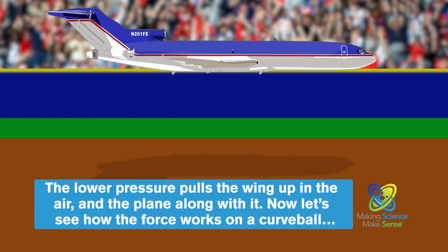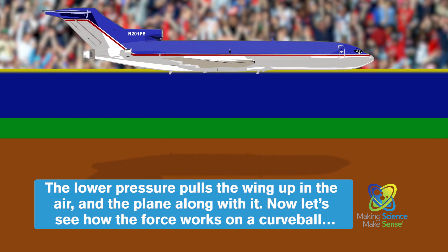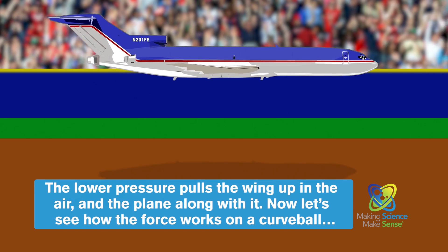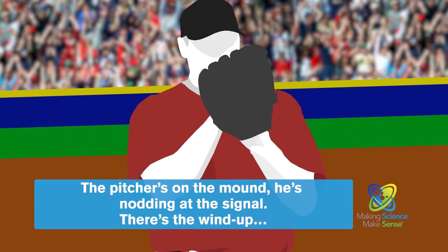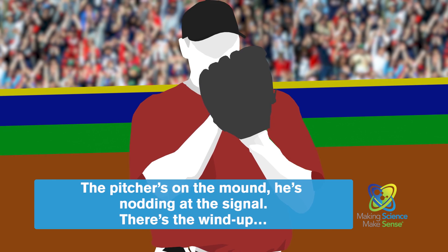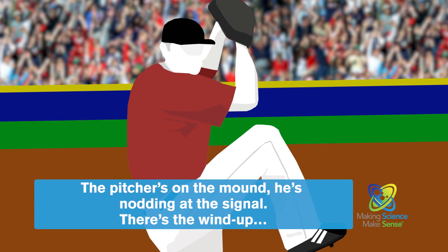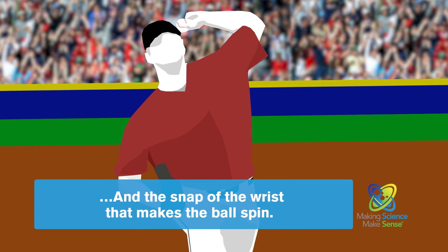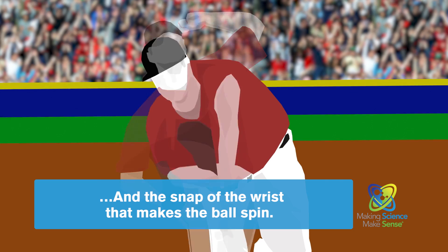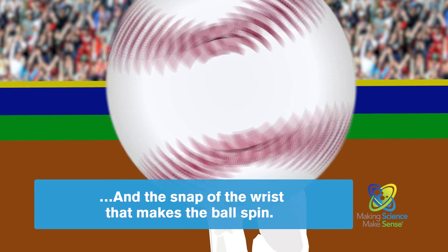Now let's see how the force works on a curveball. The pitcher's on the mound, he's nodding at the signal, there's the windup, and the snap of the wrist that makes the ball spin.